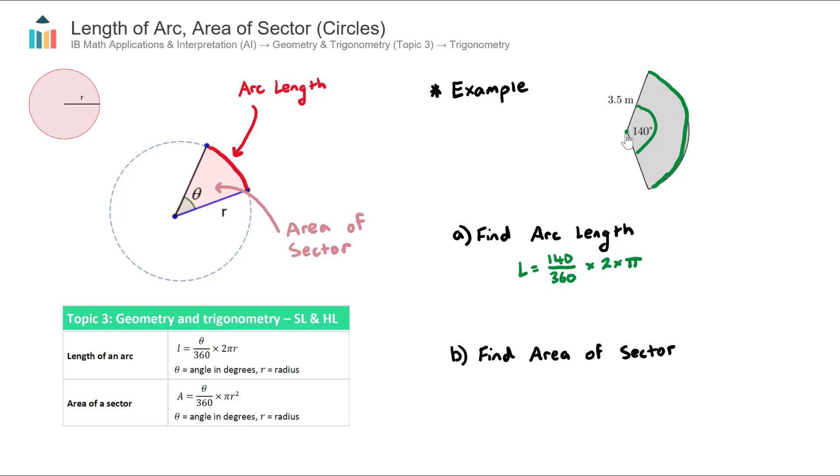The radius is from the center of the circle all the way to the outer edge, so in our case 3.5 meters. We multiply by 3.5 and then use our calculator to find out what this equals.